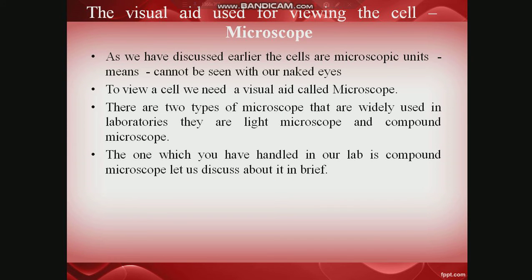The visual aid used for viewing the cell is the microscope. As discussed, cells are microscopic units that cannot be seen without an optical aid, and microscopes are that optical aid. There are two types of microscopes widely used in laboratories: light microscopes and compound microscopes. What we use in our laboratory is the compound microscope — the same one used when observing budding yeast in practicals. It has a platform called the stage, metal clips to fix the slide, and knobs to adjust the distance between the lenses and the slide.